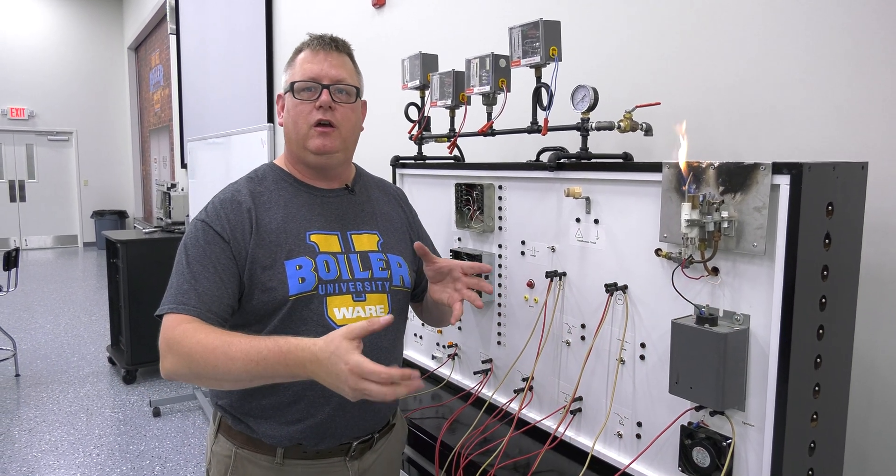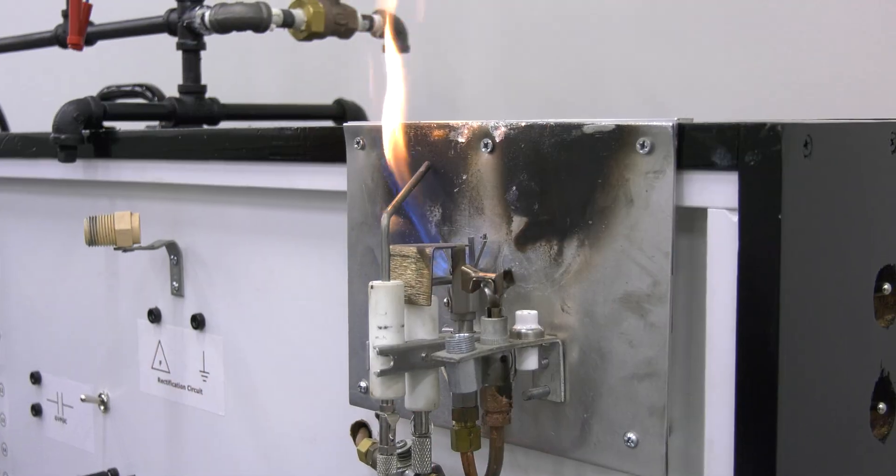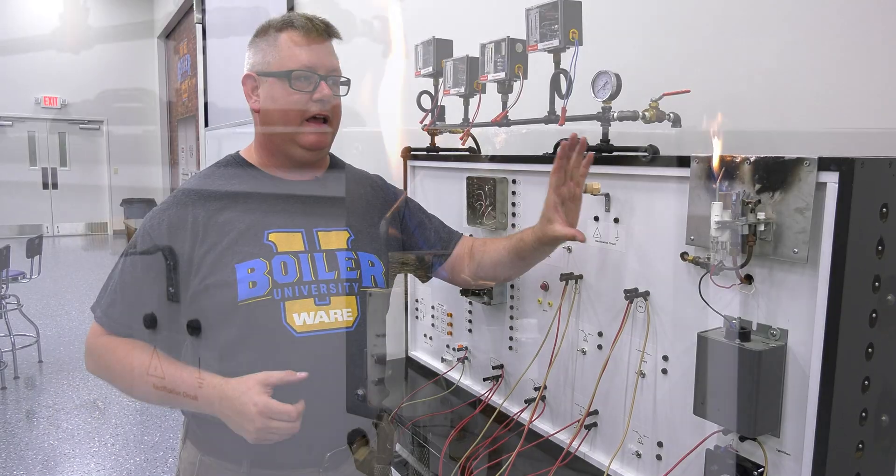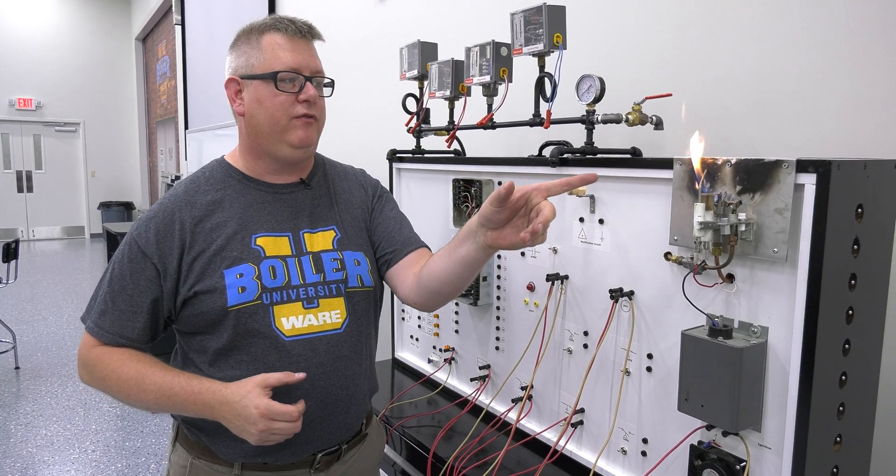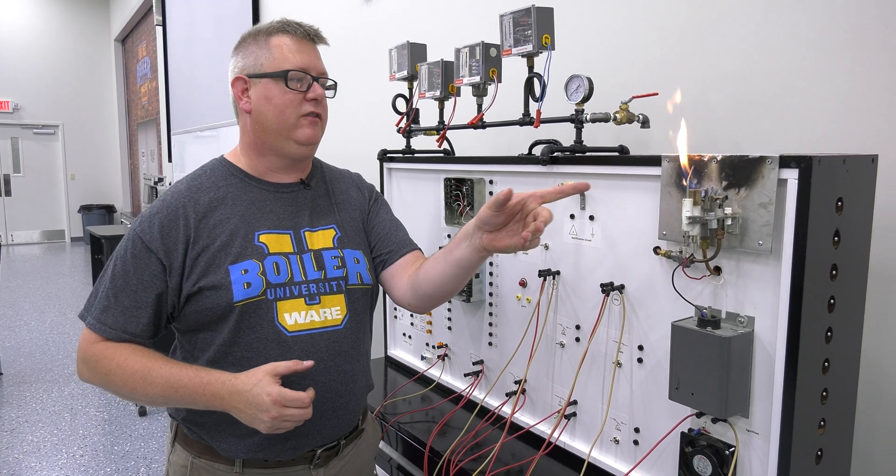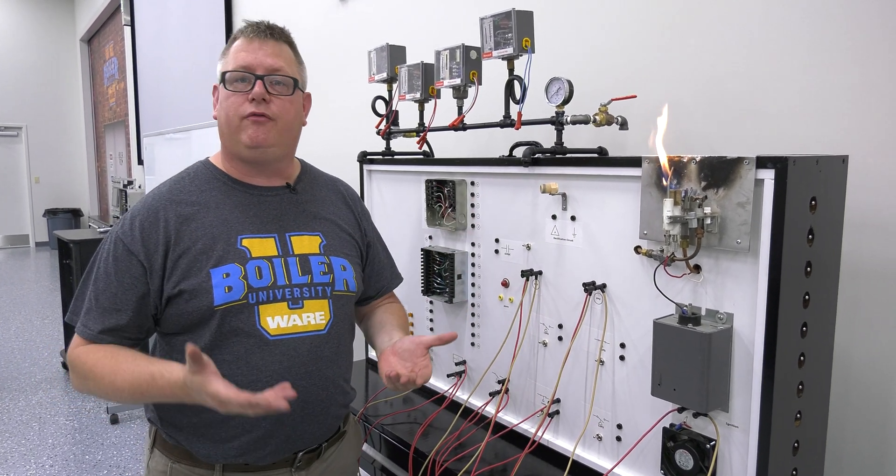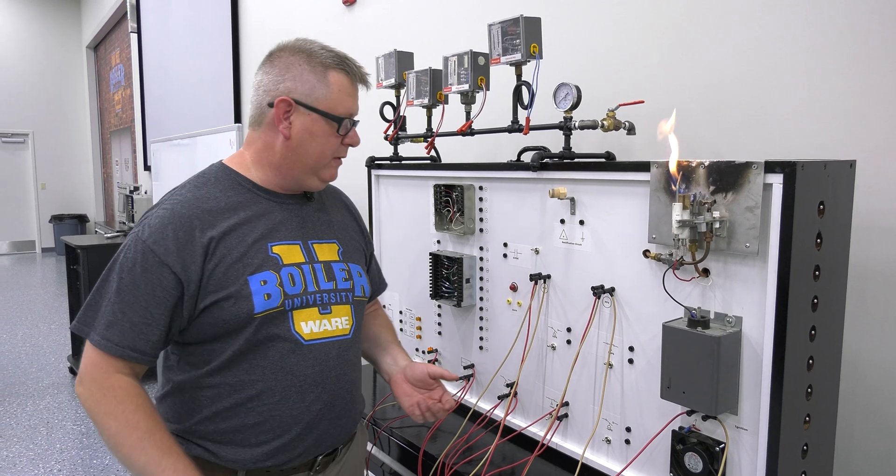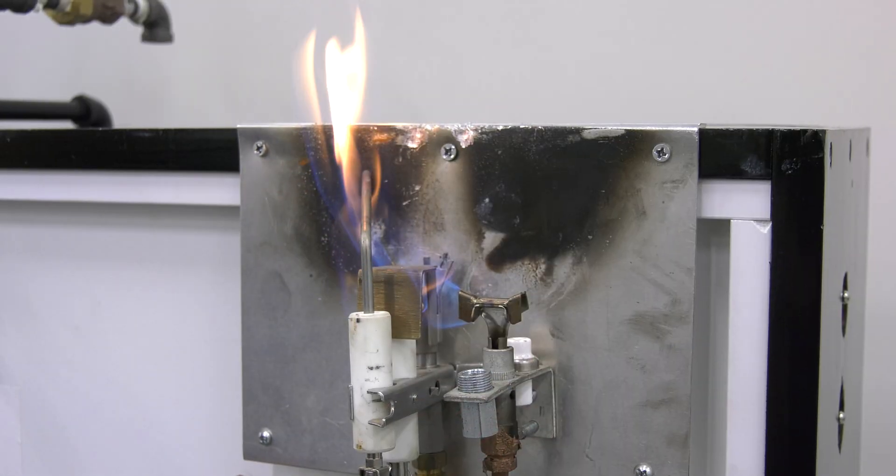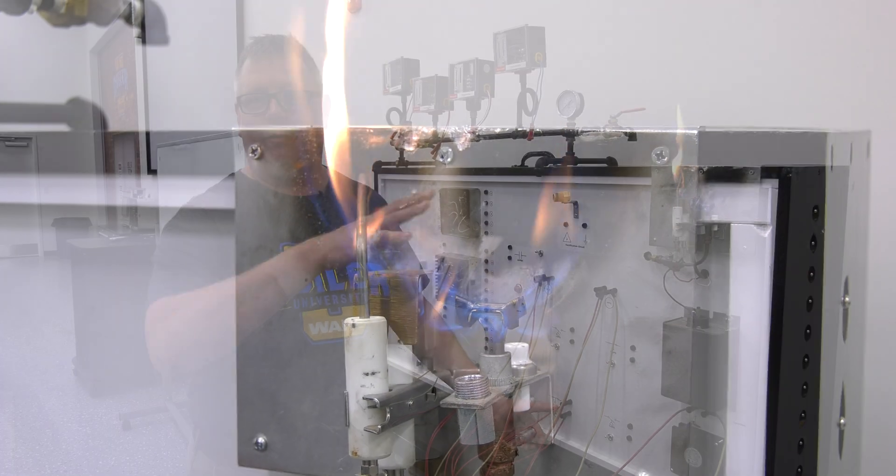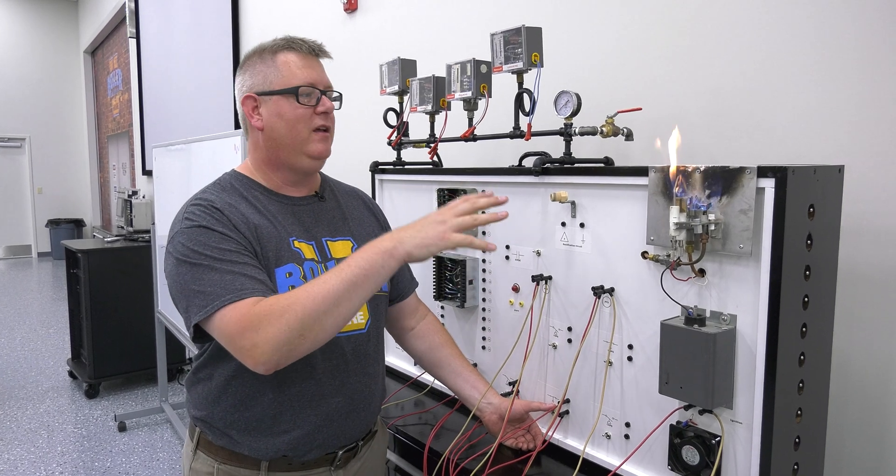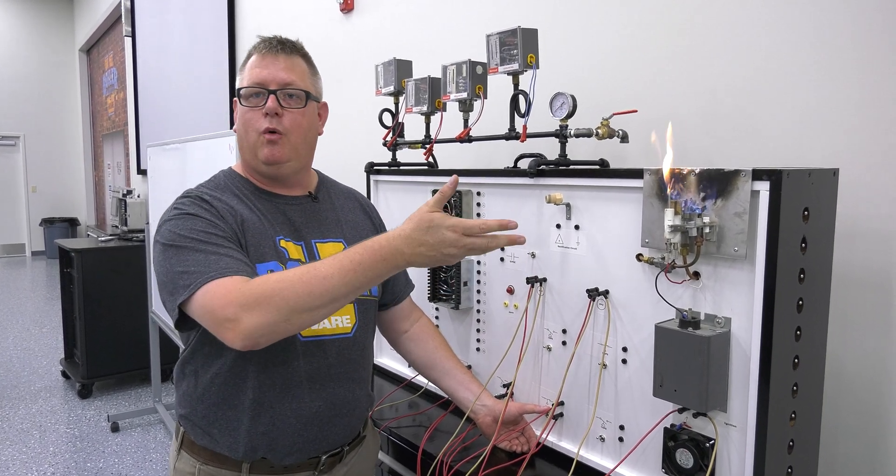With an atmospheric unit, we'll often have a standing pilot. The pilot stays lit at all times using a flame detection system to verify it's lit. When we get a call for heat, the main fuel will simply be energized—there's our main fuel, a little bit anemic there, but we get the point. When the call for heat is satisfied, the main fuel valve will shut off and the pilot will remain on.